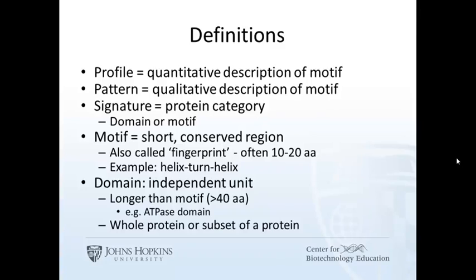Domains are usually longer, often globular regions within a protein. Small proteins may have only one domain. A domain is usually over 40 amino acids, but there are no hard agreed-upon rules, and sometimes these definitions overlap or may not be used consistently.